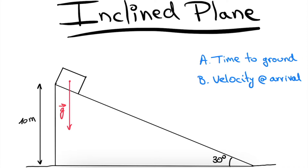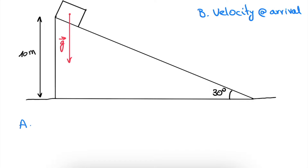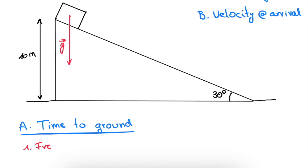This already gives you a conceptual question: in which scenario will the object have the largest velocity when it reaches the ground — when it free falls or when it slides across the plane? We will compare the sliding time with the scenario where the object just free falls from 10 meters high. Let's now answer these questions in a systematic approach, and we first look at the time it takes for the object to reach the ground.